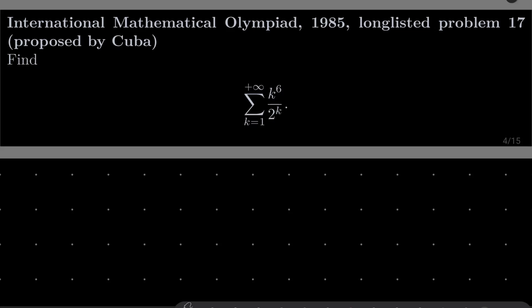Actually this problem was not given on the actual competition but it was proposed and long-listed which means that it was dismissed. But it was proposed so let's solve it. We wish to find the following series going from k equals 1 to plus infinity k to the sixth power over 2 to the power of k.